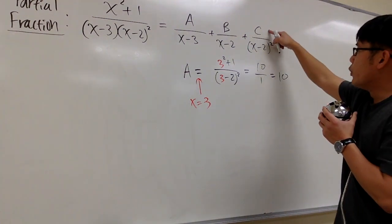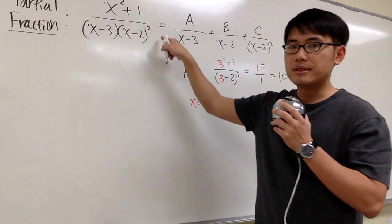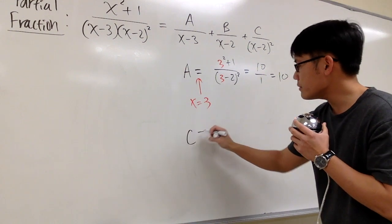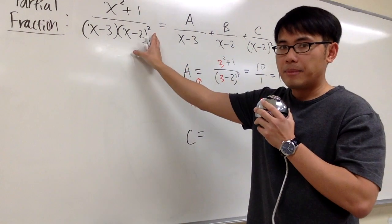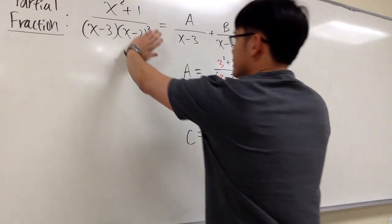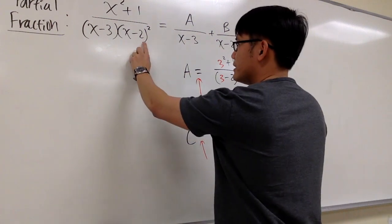And then for C, we also have the chance to use the cover-up, because this right here is exactly the same as that. So that's what we call C. Well, it's the same exact denominator, you have to cover up the entire thing. And then I'm going to plug in. Plug in what?